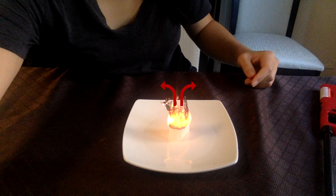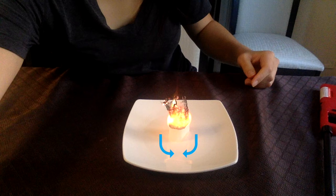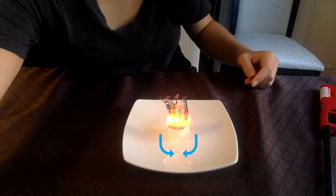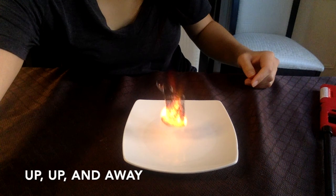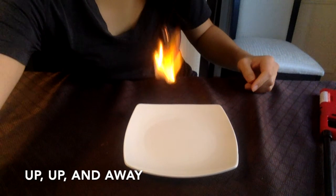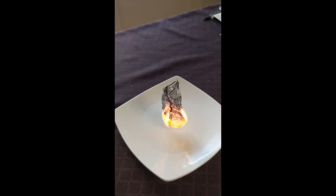This generates or creates what we call a current, or specifically a convection current, where your hot air rises up and out and then your cooler air tries to come in and under. And this movement of air is strong enough to overcome the weight of the remains of the tea bag, causing it to shoot upward into the air like a rocket.